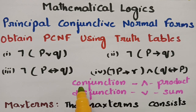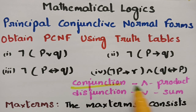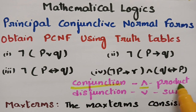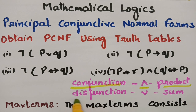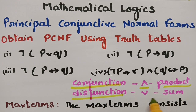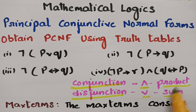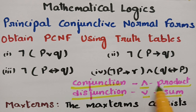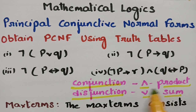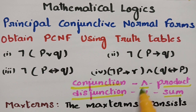Conjunction is nothing but the AND symbol — it is the product. Disjunction is the sum. So conjunction is otherwise called the product, and disjunction is the sum. Both have their own symbols.